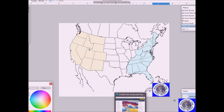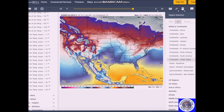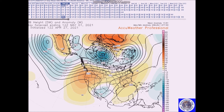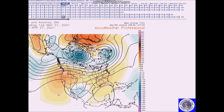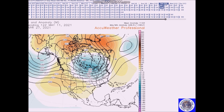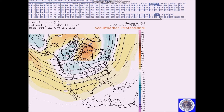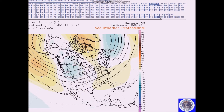Looking ahead for the period of May 10th to the 14th, the European ensembles and GFS depict a ridge in the west and a trough in the east — you can see this is the GFS, here's the European ensembles — while the other models keep a zone of flow across much of the nation.